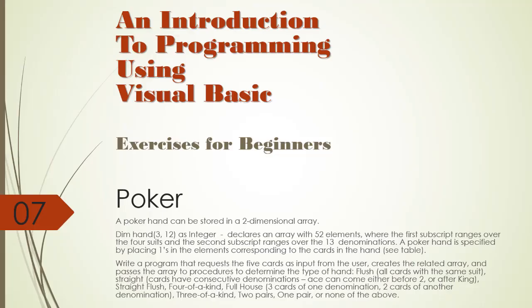Hello and welcome to an introduction to programming using Visual Basic exercises for beginners. This exercise is called Poker. A poker hand can be stored in a two-dimensional array. The declaration of an array 'hand' with indexes 3 and 12 declares an array with 52 elements, where the first subscript ranges over the four suits and the second subscript ranges over the 13 denominations. A poker hand is specified by placing ones in the elements corresponding to the cards in the hand. We will write a program that requests the five cards as input from the user, creates the related array, and passes it to procedures to determine the type of hand.